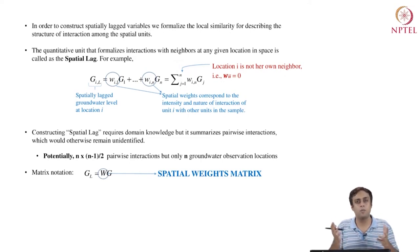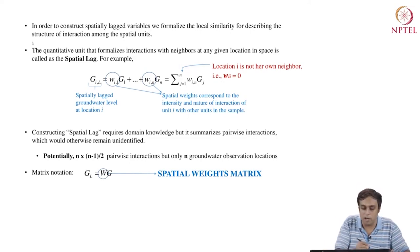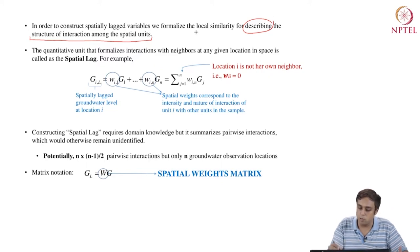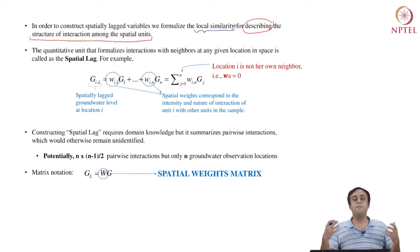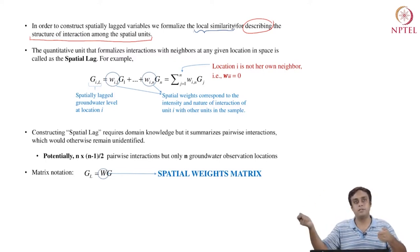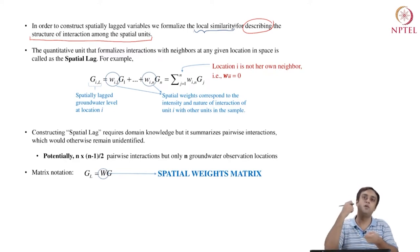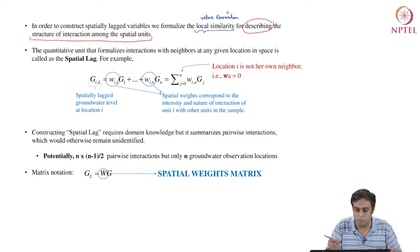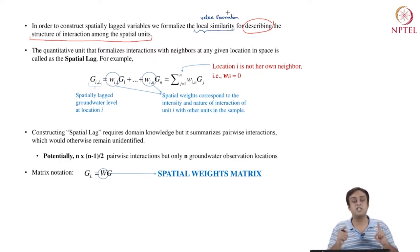Let us break that down. We are talking about the structure of interaction among spatial units, and we are describing it through the idea of local similarity. The fact that we believe in local similarity or local stationarity means we are designating spatial neighbors as the ones which will also provide a spillover effect on the value being measured. Local similarity is in terms of the value observed — the groundwater level, the price, or whatever — describing it through the structure of interaction among spatial units.